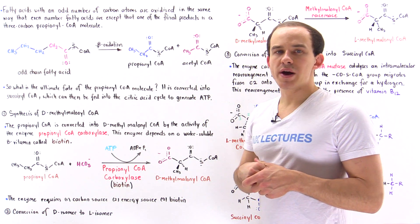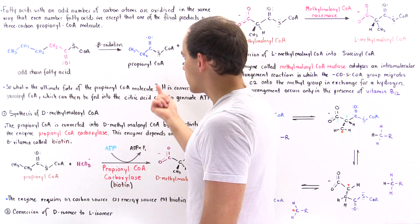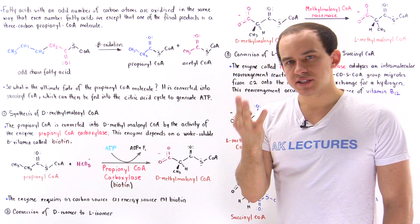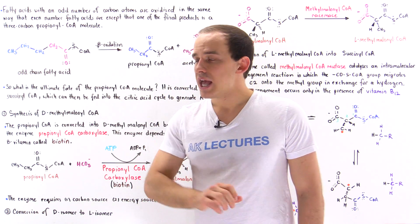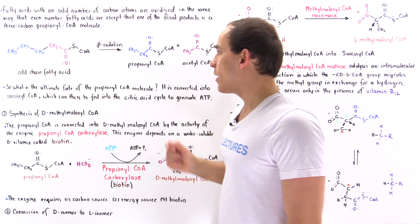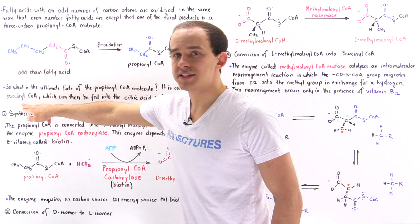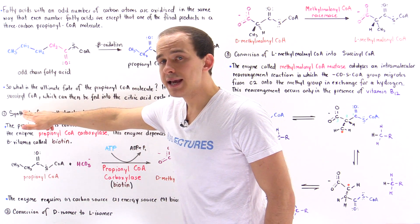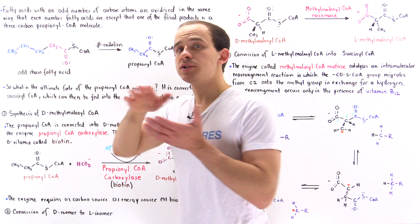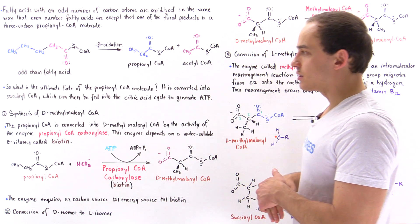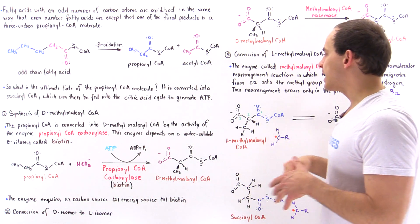What happens to this propionyl coenzyme A will be the focus of this lecture. Inside the matrix of the mitochondria, the propionyl coenzyme A molecule undergoes a 3-step process in which we transform it into succinyl coenzyme A. The ultimate fate of the propionyl coenzyme A produced in the oxidation of odd chain fatty acids is to form succinyl coenzyme A, because succinyl coenzyme A is an intermediate of the citric acid cycle. We place it into the citric acid cycle, and that helps generate ATP molecules for energy.